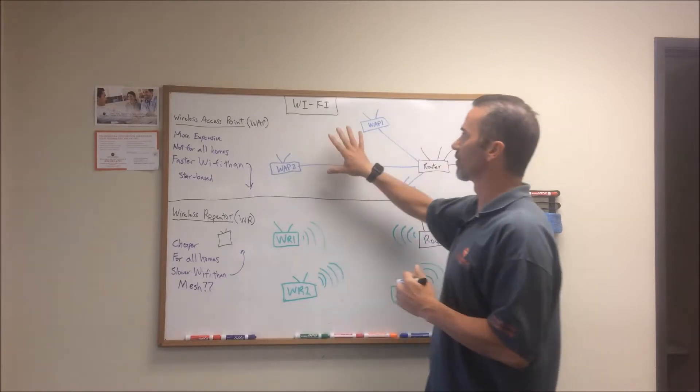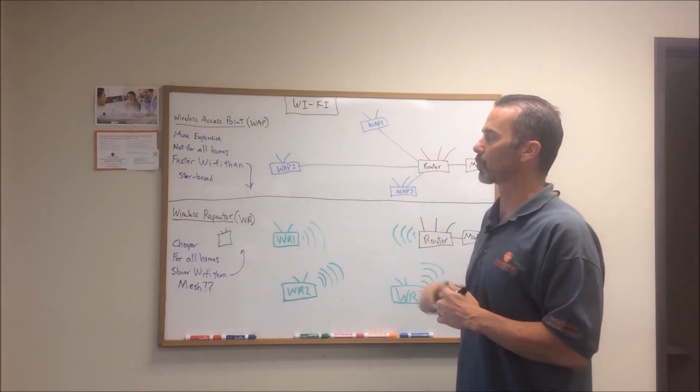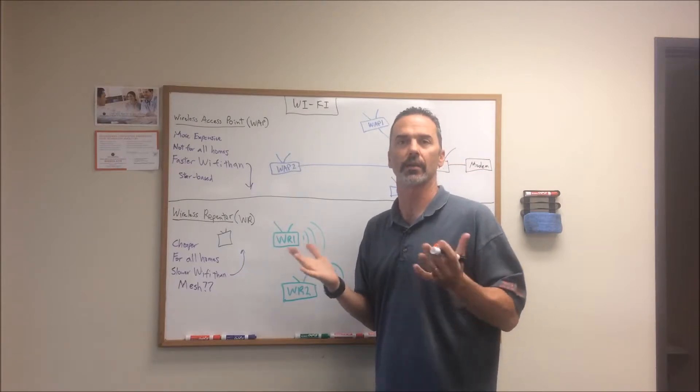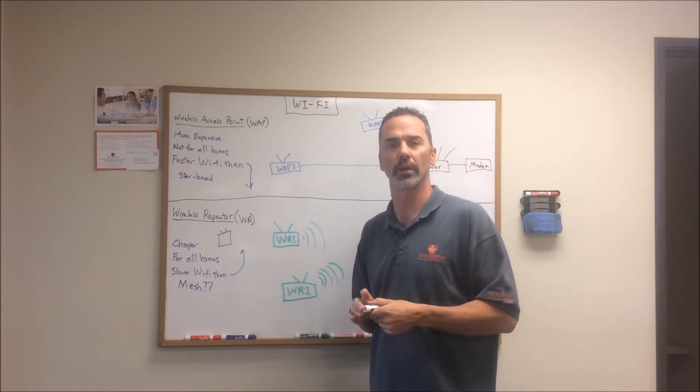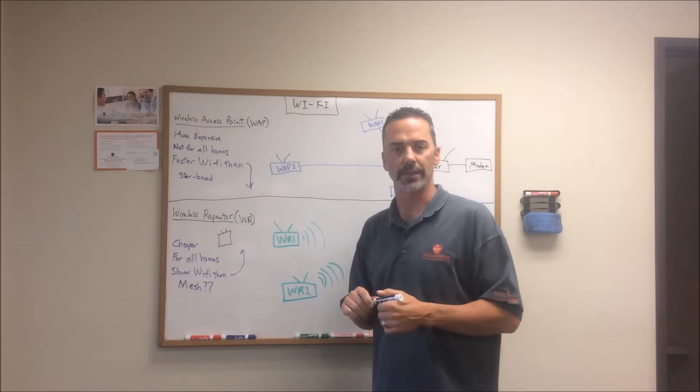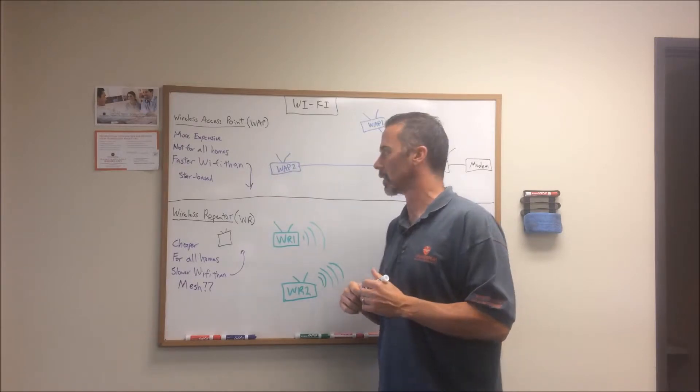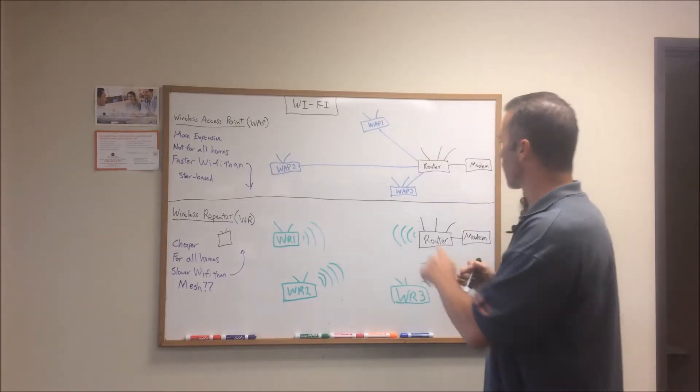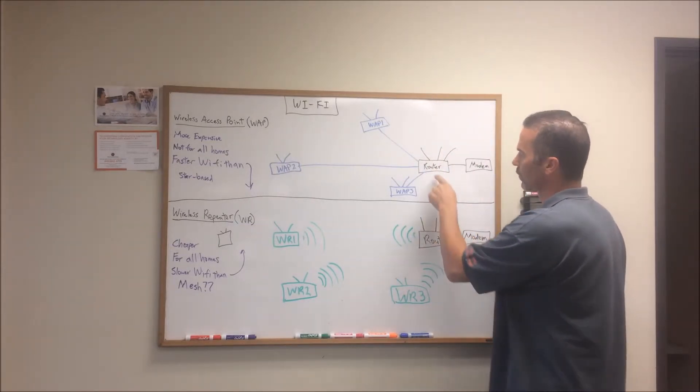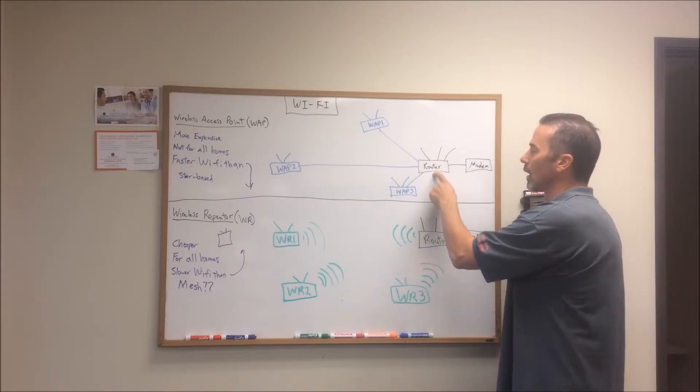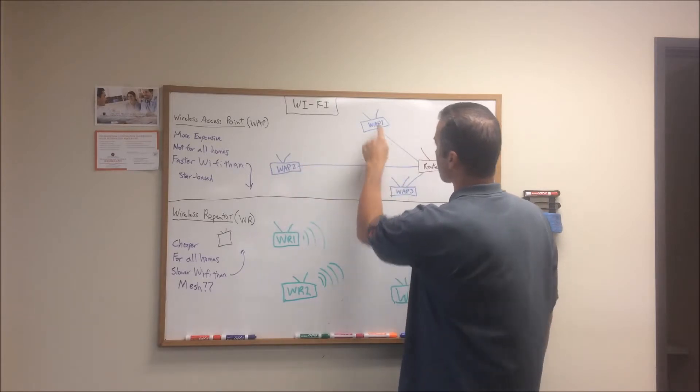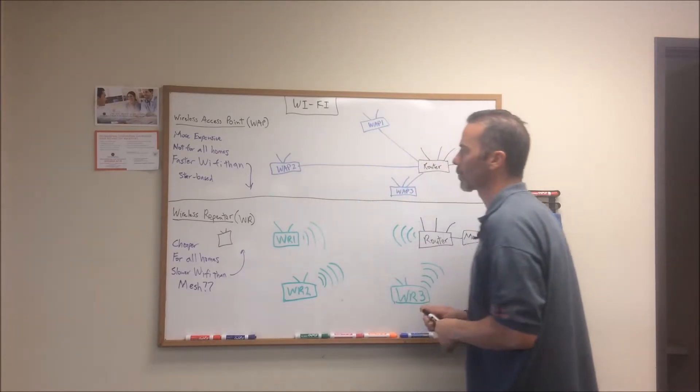But we actually prefer the wireless access point option for really honestly the main reason is higher data throughput for your wireless devices. We'll get to that in a second. So first I want to explain how the wireless access point system works. So very similarly to the wireless repeater system, we have our router here. And then what is now going to be different is we're going to be running a wire between each of these wireless access points that are deployed throughout the property.